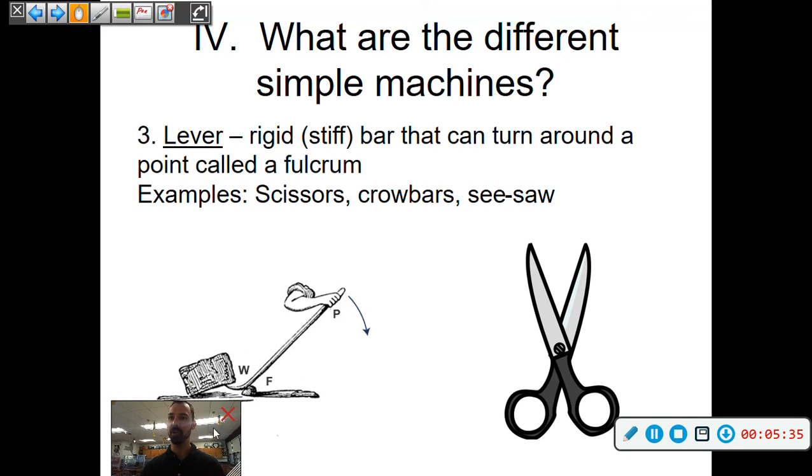Next we have a lever, which we saw already with the boulder. So it's a rigid stiff bar that turns around a point called a fulcrum. So the fulcrum is where it changes direction. So we push downward on the lever and then it pushes the object upward. So examples of that: scissors are a lever.